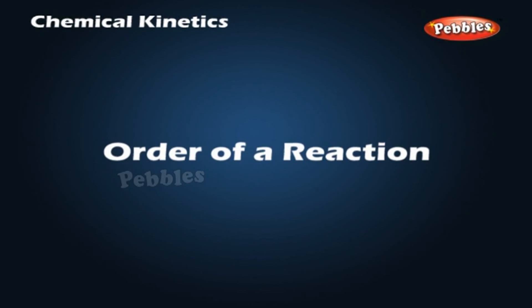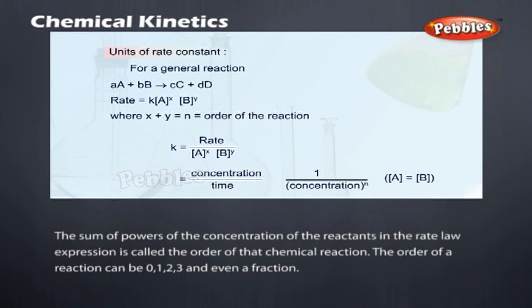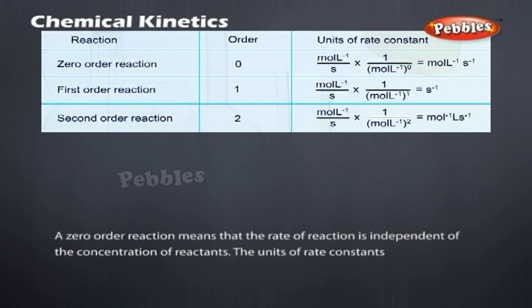Order of a reaction. The sum of powers of the concentration of the reactants in the rate law expression is called the order of that chemical reaction. The order of a reaction can be 0, 1, 2, 3, and even a fraction. A zero-order reaction means that the rate of reaction is independent of the concentration of reactants.